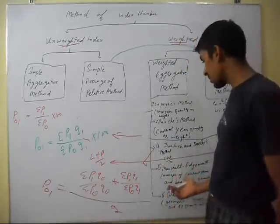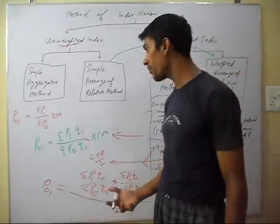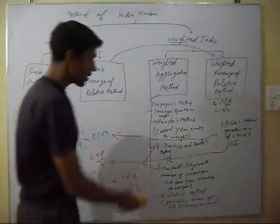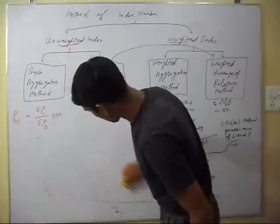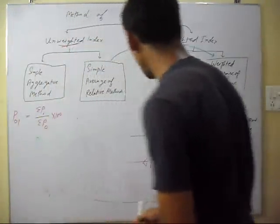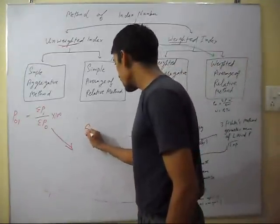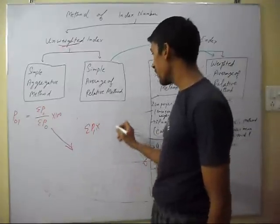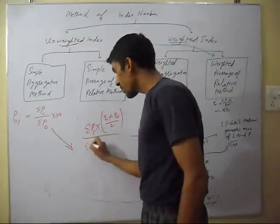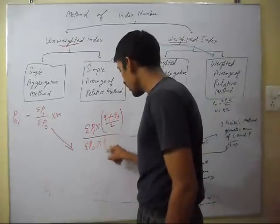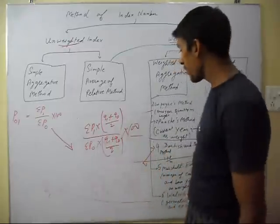Next is the Marshall Edgeworth method. This uses the average of current year quantity and base year quantity as the weight. The formula is: sigma P1 multiplied by (Q1 + Q0)/2, divided by sigma P0 multiplied by (Q1 + Q0)/2. So this is the Marshall Edgeworth method.